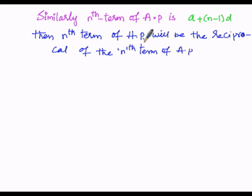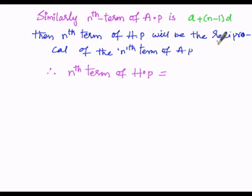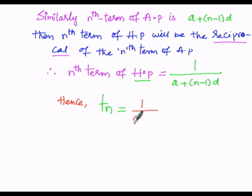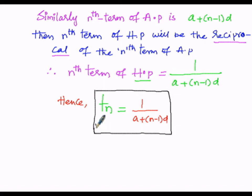Therefore, the nth term of harmonic progression is the reciprocal of the nth term of arithmetic progression. Since the nth term of AP is a plus n minus 1 into d, the nth term of HP is the reciprocal: 1 divided by a plus n minus 1 into d. Hence mathematically we write it as tn equals 1 divided by a plus n minus 1 into d. This is the nth term formula of harmonic progression. Now let us perform a problem.